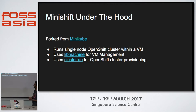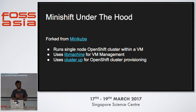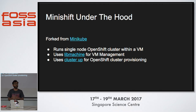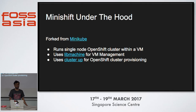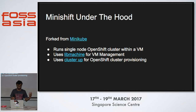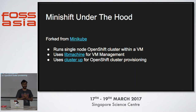Under the hood, it's forked from Minikube. What it does is run the single-node OpenShift cluster within a VM using the native hypervisor of the machine. In Windows, it will use HyperV. In Linux, it will use KVM as the default. So you don't have to install any extra tooling around virtualization. It uses lib machine to manage VM management, because lib machine has different drivers for different hypervisors - like KVM driver, Xhyve driver, and the KVM drivers. Then it will use OC cluster up for provisioning the OpenShift cluster - once the VM is up, we just run OC cluster up so that it will start the cluster.